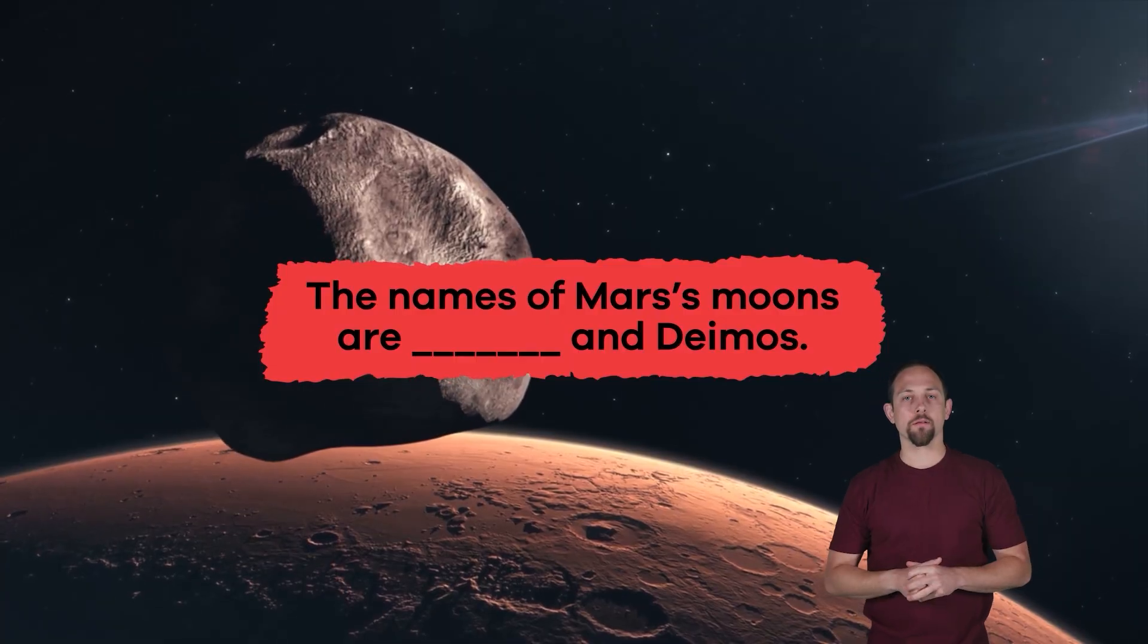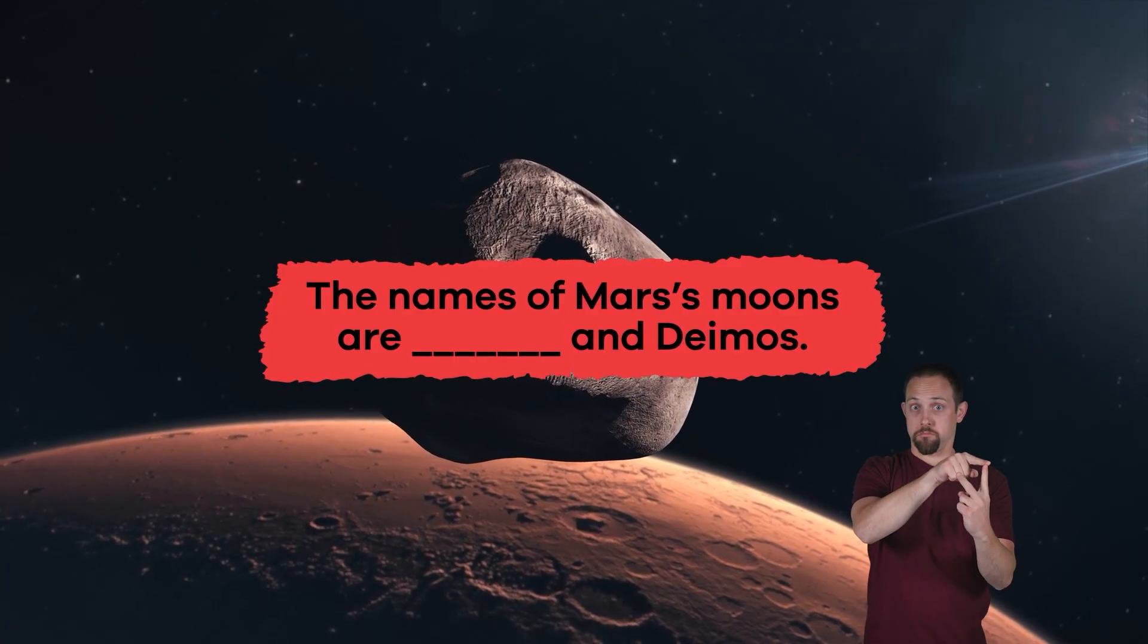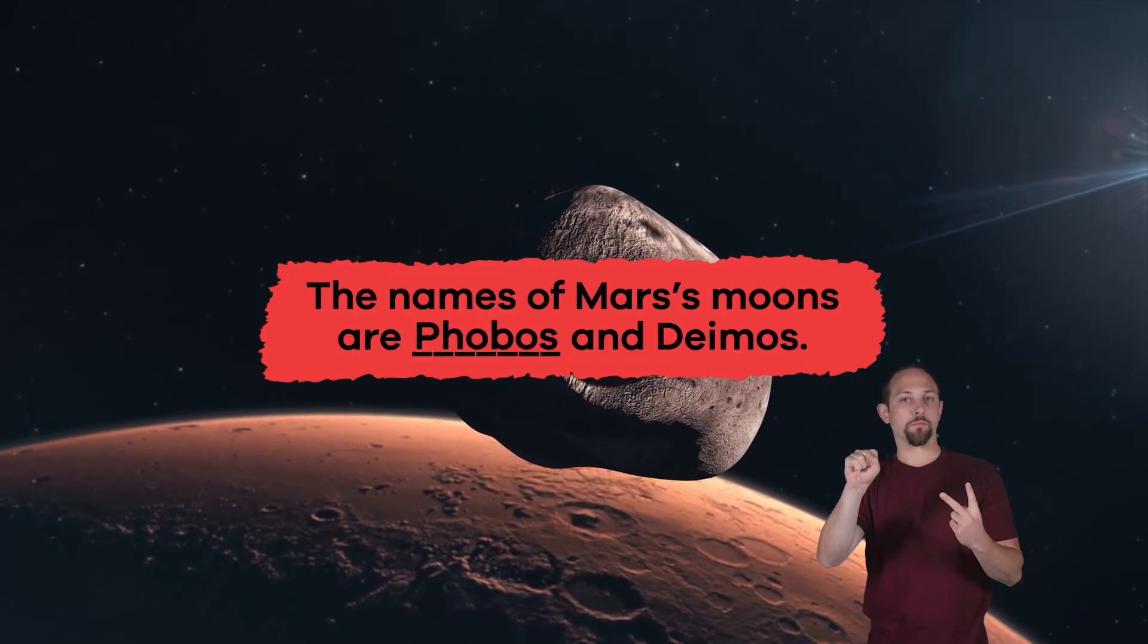Fill in the blank. The names of Mars' moons are blank and Deimos. Phobos.